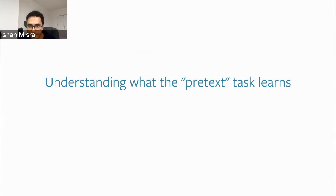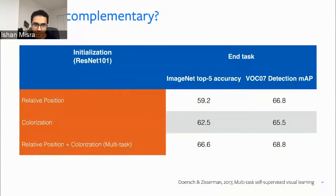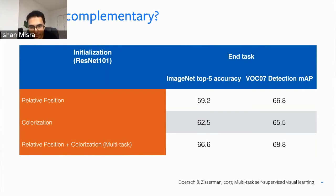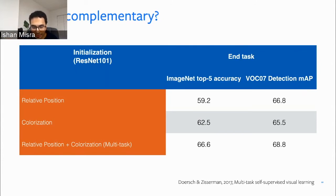Are these pretext tasks even complementary? In 2017, there was a nice study taking the relative position task and the colorization task and combining them in a multitask network. Combining tasks actually improves performance significantly — either on detection or on ImageNet. The paper combined four or five tasks and showed that adding each one still gained performance. But the effect saturated: after maybe three or four tasks, the marginal gain from adding a fifth or sixth task is very limited. To understand why, we need to understand what these pretext tasks do and what problems exist in how they're set up.